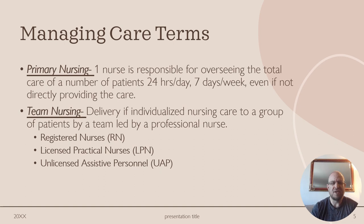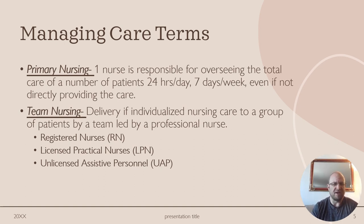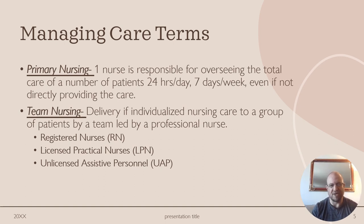Primary nursing is where one nurse is responsible for overseeing care of a patient 24 hours a day, seven days a week, even if not directly responsible for care — like in a group home for disabled people. Team nursing involves a registered nurse, licensed practical nurse, or unlicensed assistive personnel — kind of a group like an RN and CNA working with a group of patients.